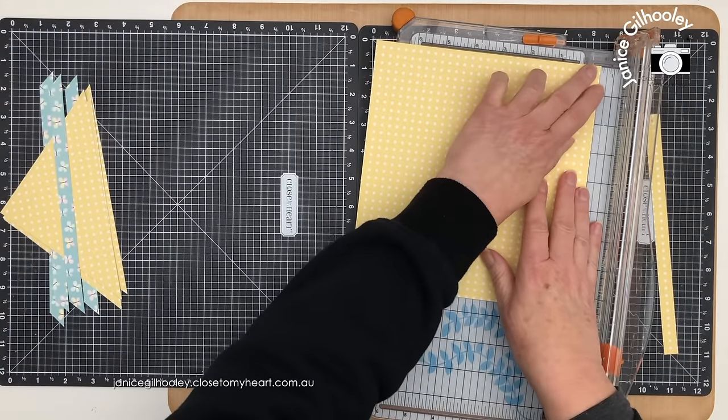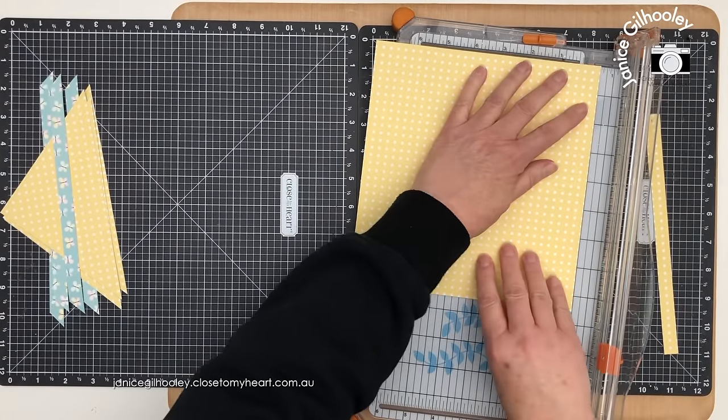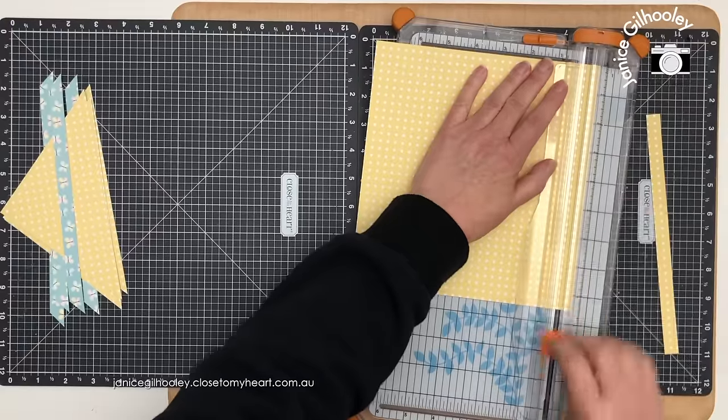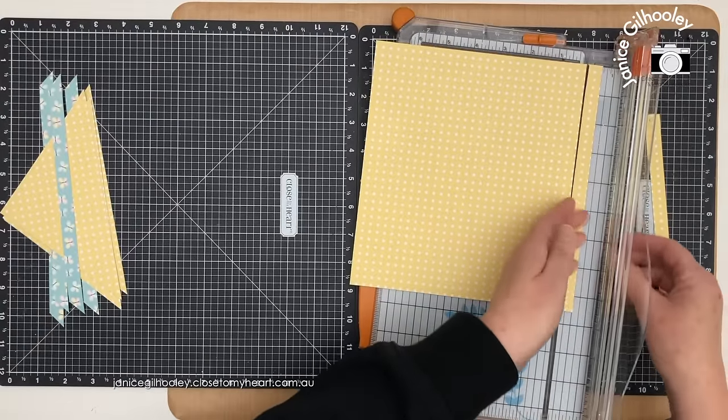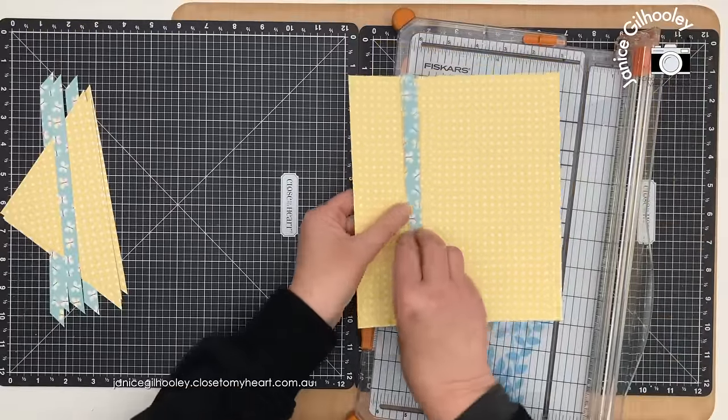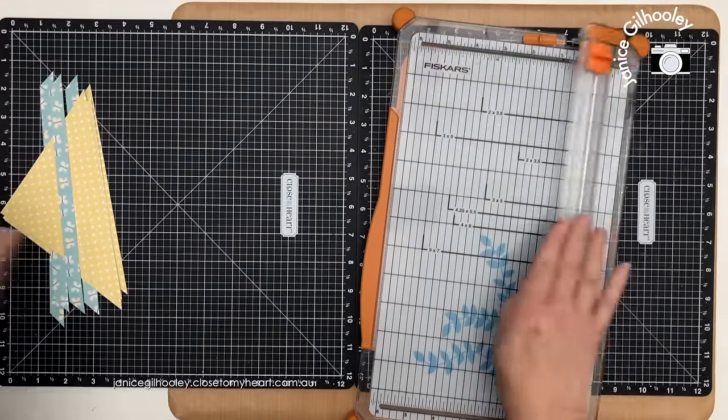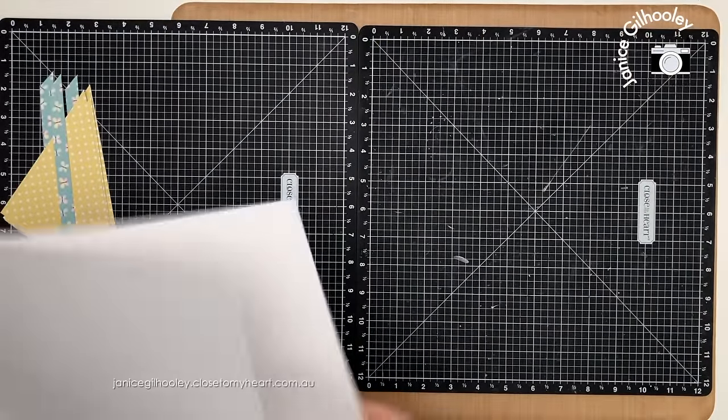I know this is going to give me a rectangle rather than a proper square but that's all going to work out when I adhere things down onto the layout. I'm just going to keep those pieces together and put them aside for now and then I'll do a dry fit.